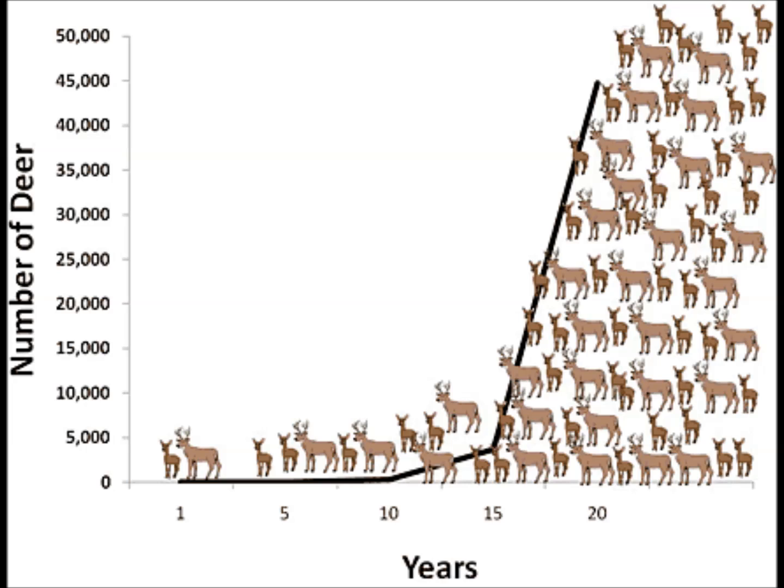As individuals in a population get older, as long as they are healthy, they reproduce and have their own offspring. Then, once these offspring are old enough, they have their own babies. If this continued forever, the population would continue to increase forever over time. This is called exponential growth.